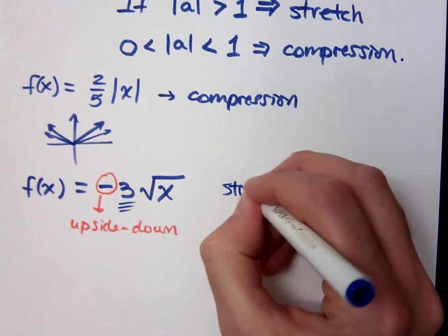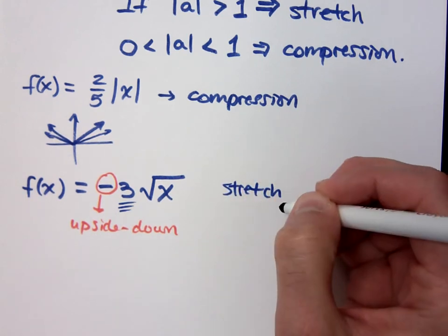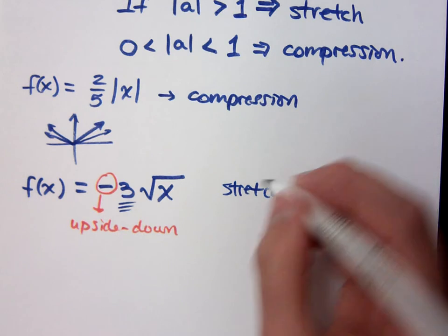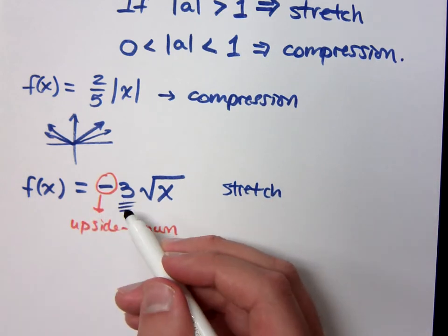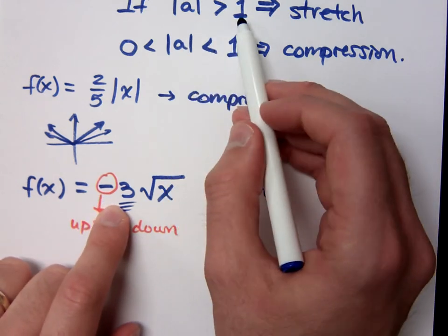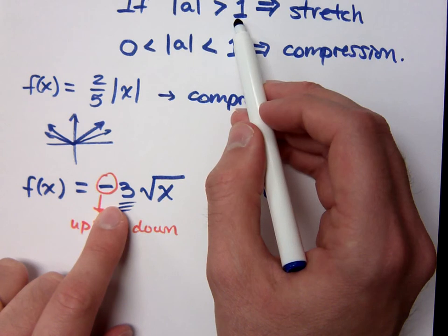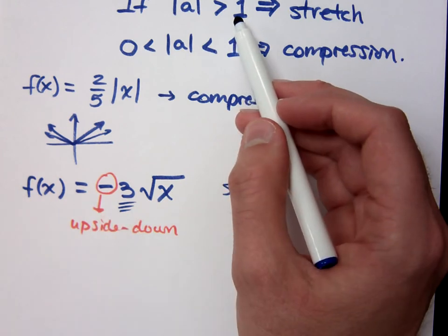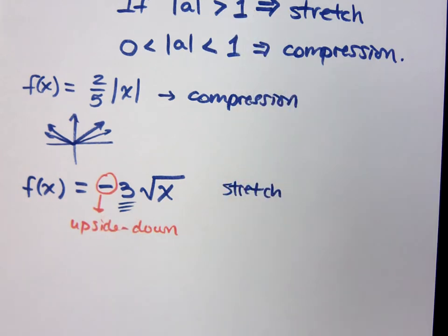Now, what does this 3 mean, though? This means it's going to be a stretch, so it will be going down because of the negative, but the 3 is going to make it go even steeper. But isn't negative 3 less than negative 3? It's the absolute value. The absolute value of 3 is greater than 1. When I talk about a stretch or a compression, it's the absolute value of that multiple. No matter what the sign is.